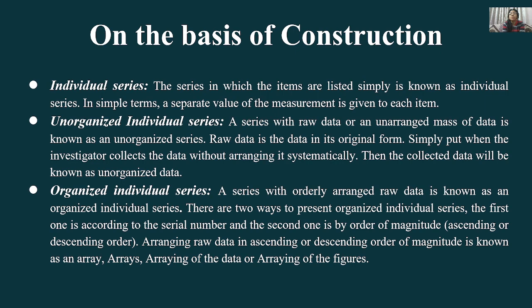Individual series: the series in which items are listed simply is known as individual series. A series with raw data or an unarranged mass of data is known as an unorganized series. Raw data is the data in its original form. When we collect the data, that becomes unorganized individual series because first, there's no grouping, so it's individual, and we haven't organized it, so it's unorganized.